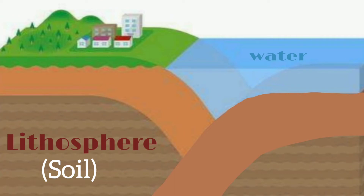Let's see the lithosphere. Lithosphere is the solid outer part of the earth. The word 'litho' relates to stone, so we can say that lithosphere means soil or the rocky surface.